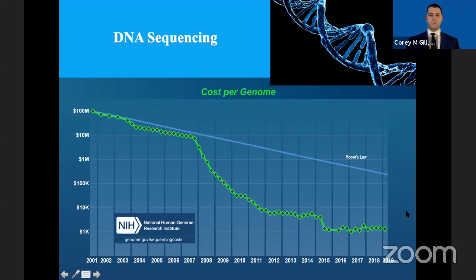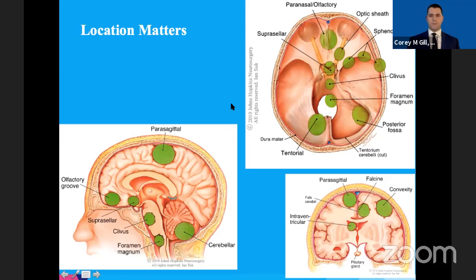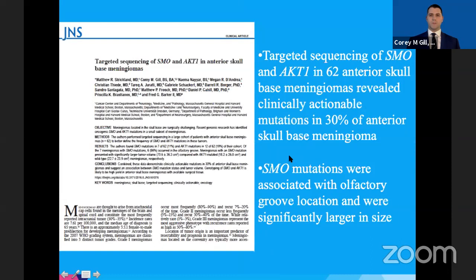2013 was known within neuro-oncology as the year of the meningioma, where four high-impact papers identified that beyond NF2, there are four recurrent alterations in AKT1, Smoothened, TRAF7, and KLF4. Emerging data suggested that meningiomas located on the convexity differ significantly in underlying tumor genomics from those along the skull base region. In 2016 at MGH, we amassed a cohort of 62 anterior skull base meningiomas and performed targeted sequencing of AKT1 and Smoothened, identifying that 30% of anterior skull base meningiomas had clinically actionable mutations. Smoothened mutations were associated with the olfactory groove location and were significantly larger in size.